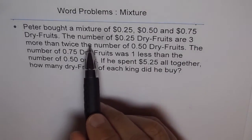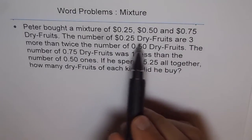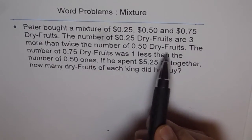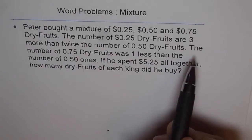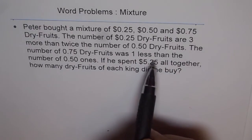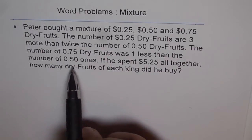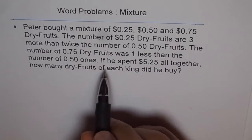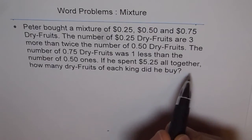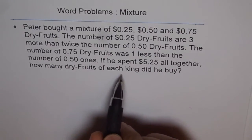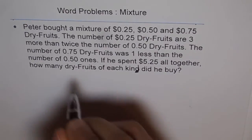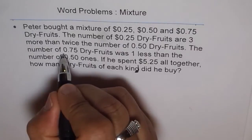The number of 25 cents dry fruits are three more than twice the number of 50 cents dry fruits. The number of 75 cents dry fruits was one less than the number of 50 cents ones. If he spent $5.25 altogether — so this is a dollar amount here.